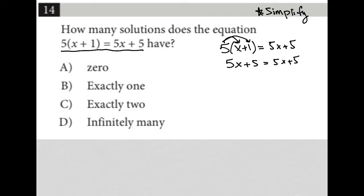And what do I know? First of all, this is a true statement. 5x+5 does equal 5x+5. That is always the case. If I were to attempt to combine like terms, I'd find out that I'd be left with 0=0, which is also a true statement. So let's see what the question is asking for. How many solutions does the equation have? Well, it actually has infinitely many.